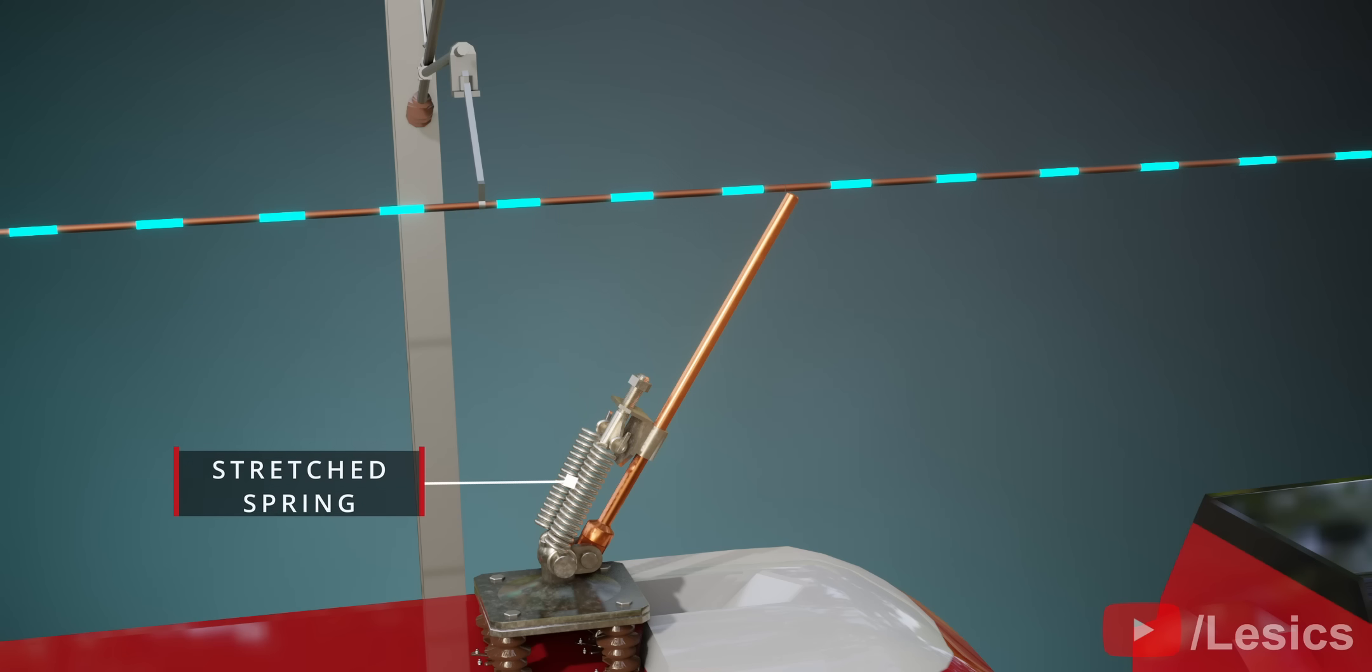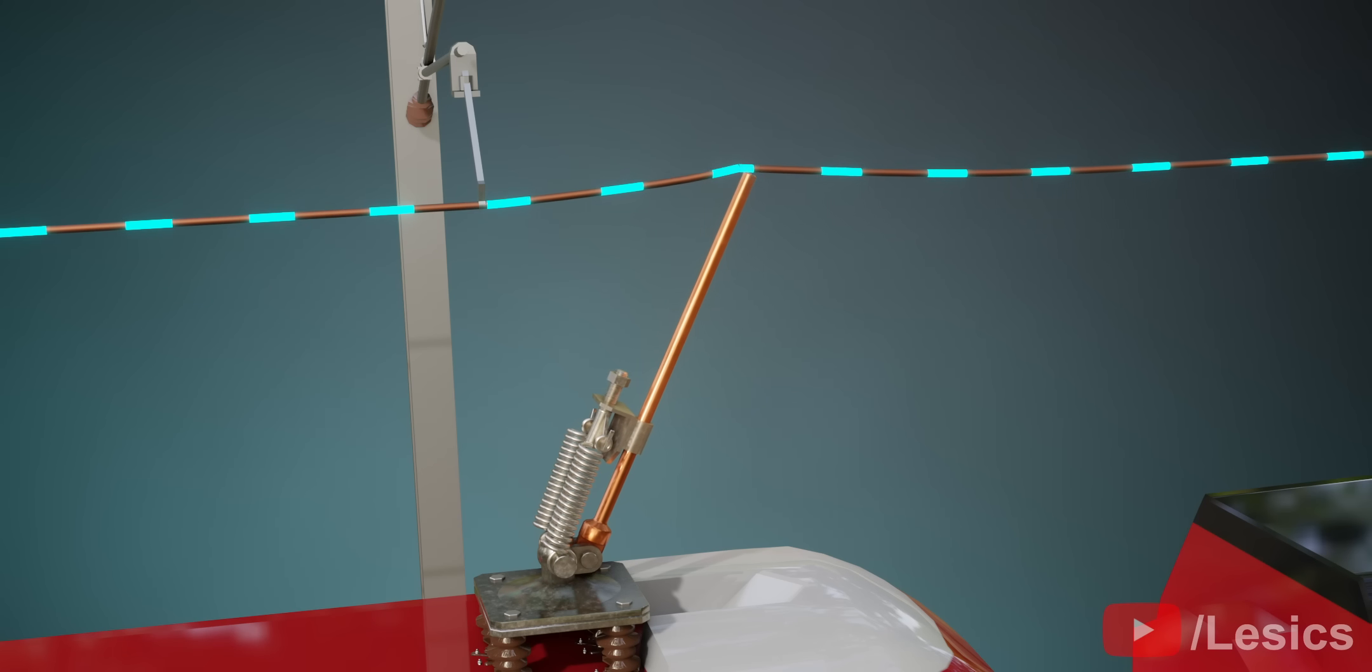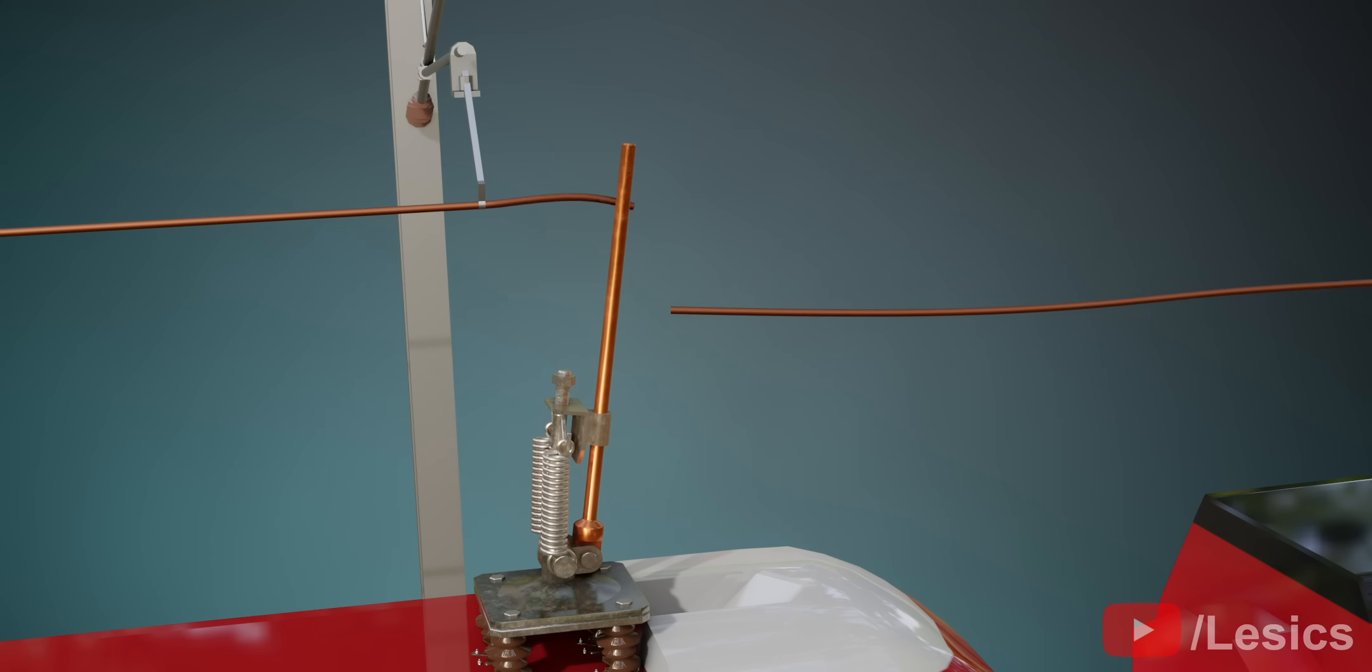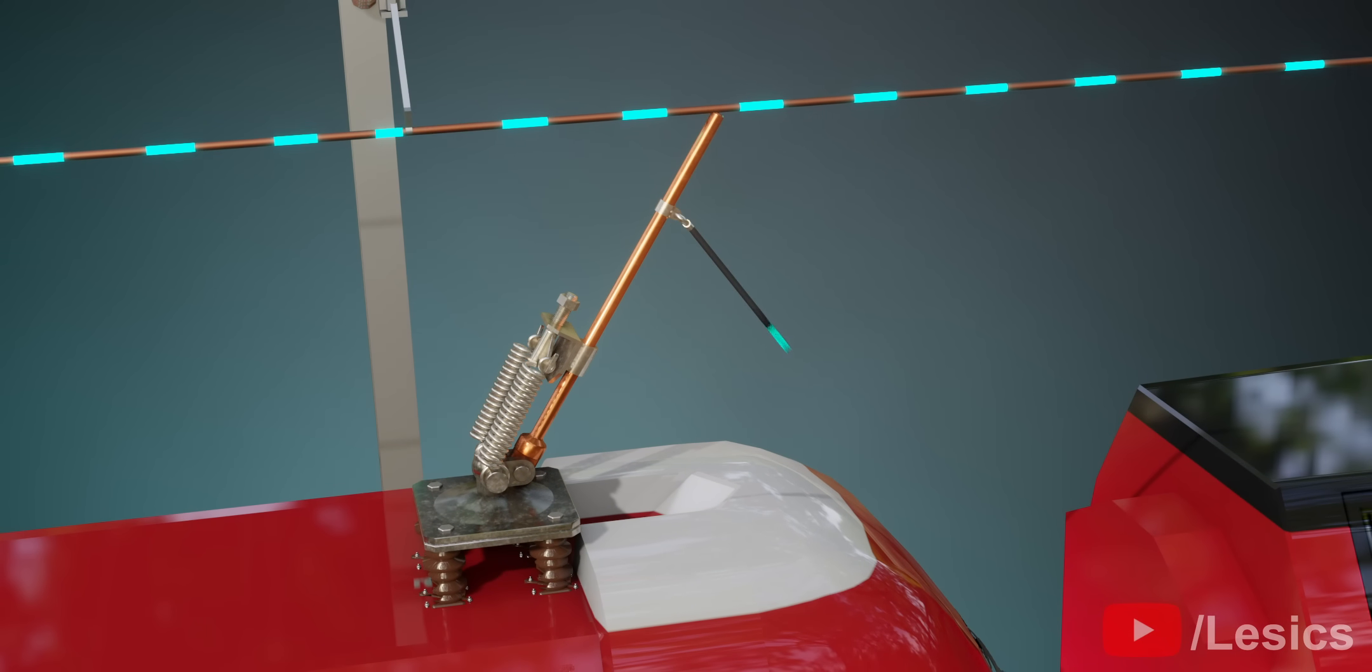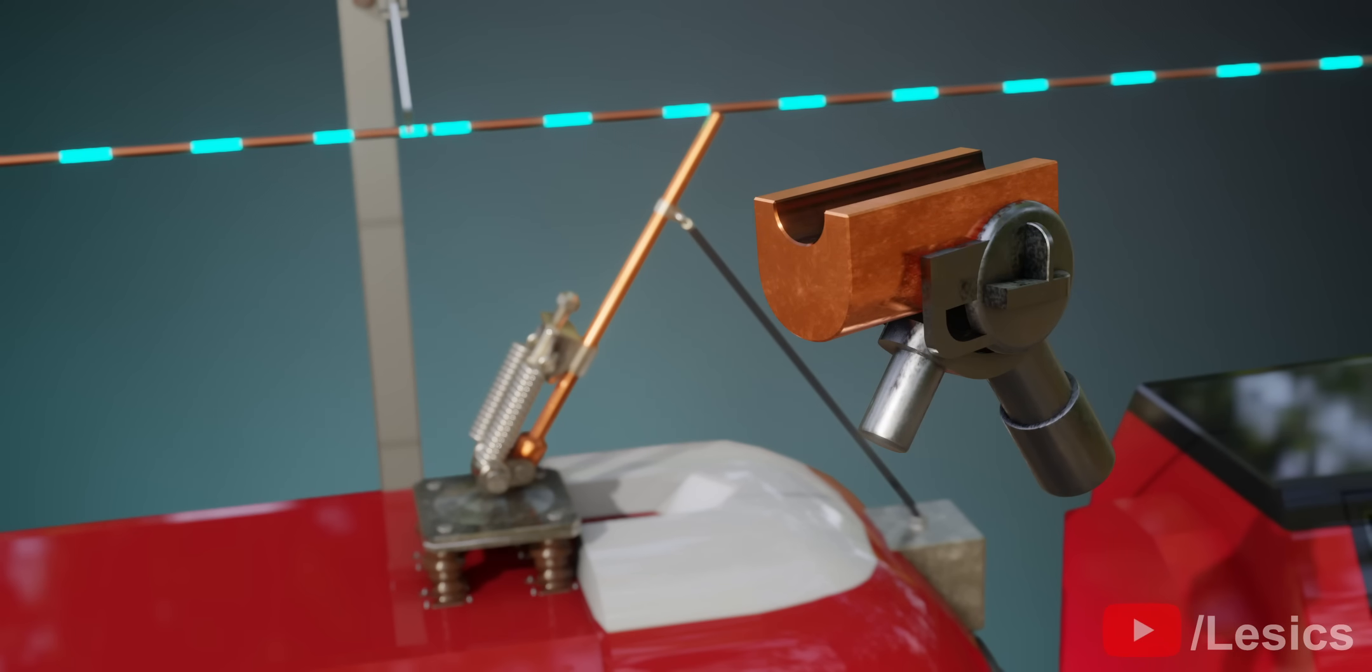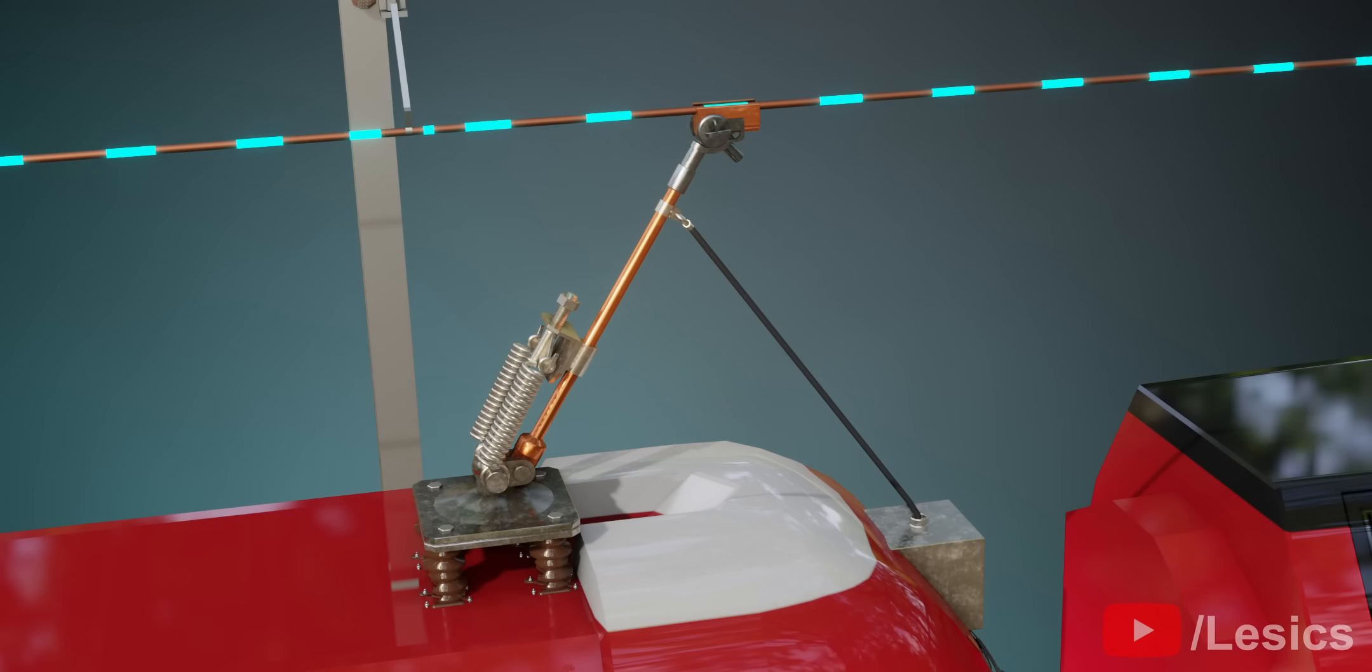However, too much force on the spring can break the tensioned overhead line. To counterbalance this spring force, let's use rope to tie the collector in the other direction. This method balances the collector perfectly. For precise alignment, we can attach a grooved copper head.